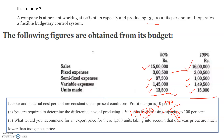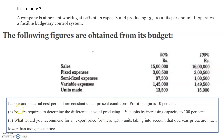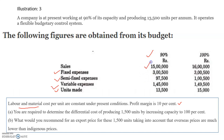Labor and material cost per unit are constant under present conditions. This is mentioned because labor and material cost is not given directly in the question — we need to find it. Fixed expenses, semi-fixed expenses, and other variable expenses are given. The profit margin is 10%, which is included in the present case.